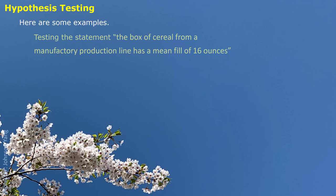If we are testing the statement that a box of cereal from a manufacturing production line has a mean fill of 16 ounces — for regular quality control to find out if the production line is working properly — we set up our null hypothesis as mu equals 16 ounces, and the alternative hypothesis as mu not equal to 16 ounces. This is a two-sided or two-tailed hypothesis test.